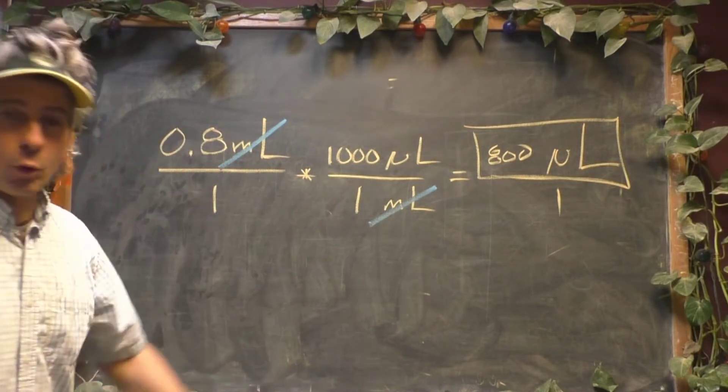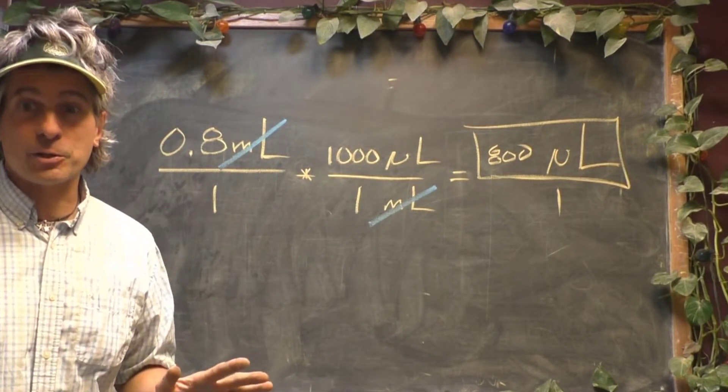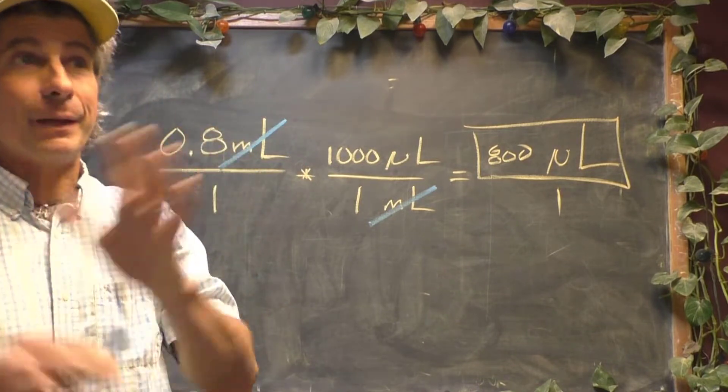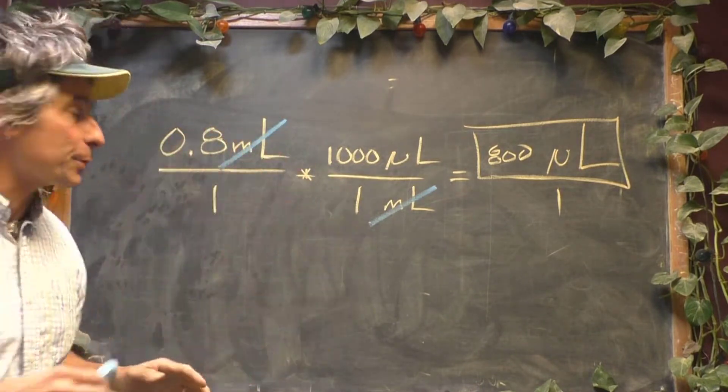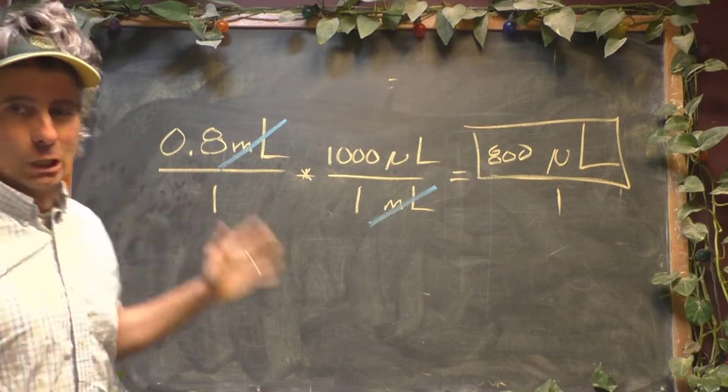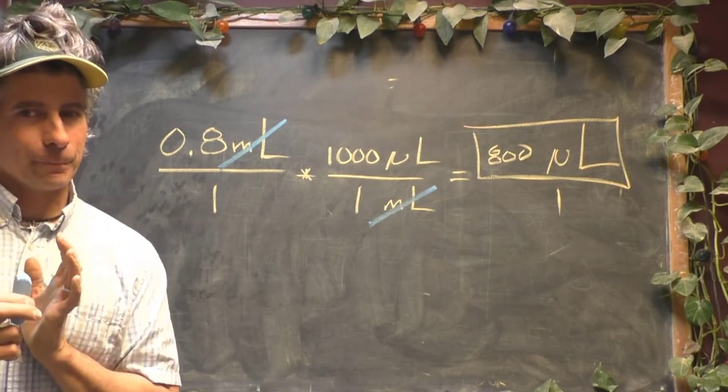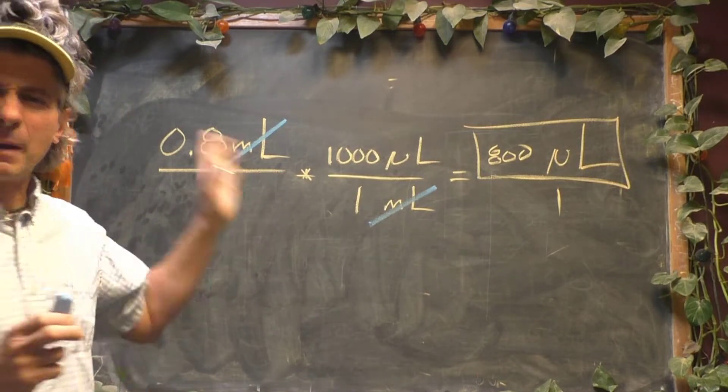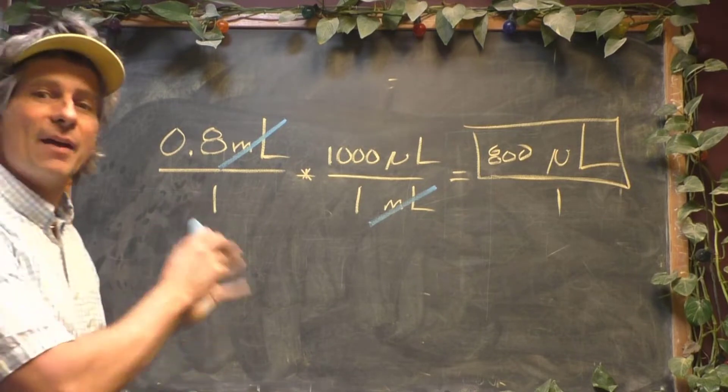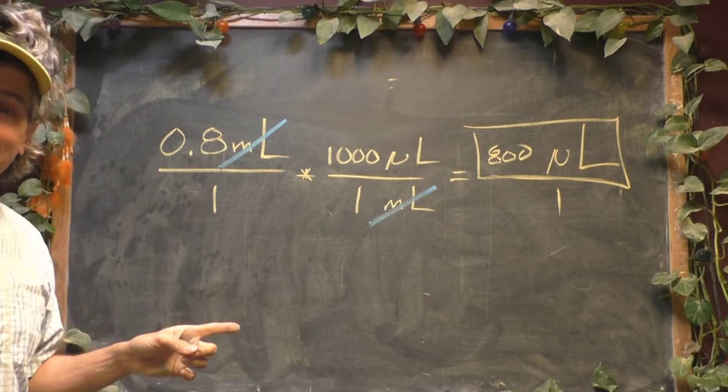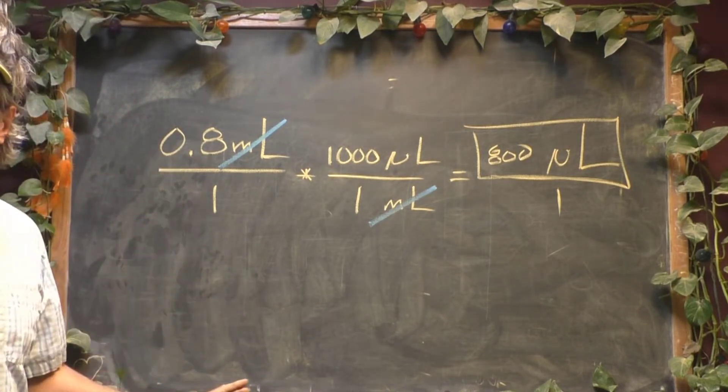So this is going to be 800 microliters. This method will work regardless of your measurement system, whether it's metric, whether it's English, whatever system you're using. But because you're dealing with the metric system here, this might be a little bit cumbersome, a little bit too heavy handed. Let's look at the exact same problem without having to go through all of this.